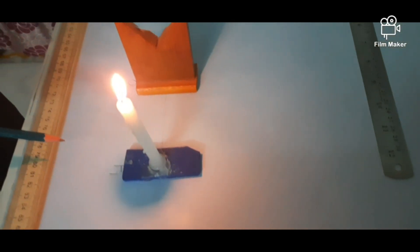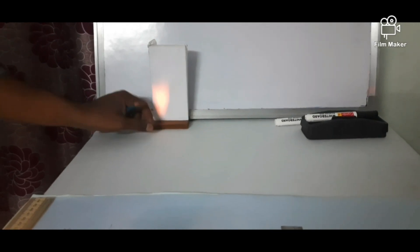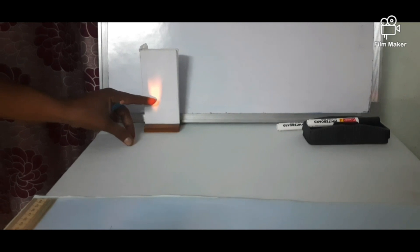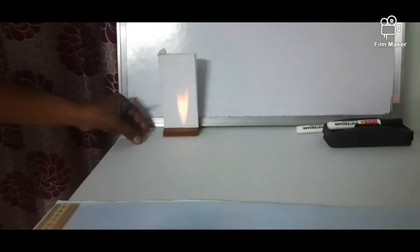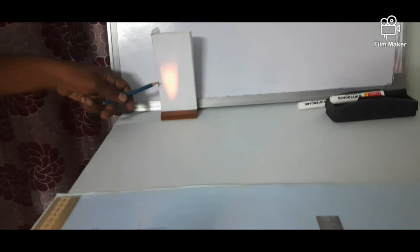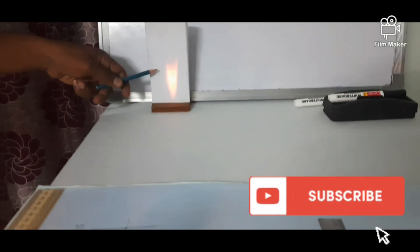Now let us see Case 5: when the object is placed on the focus. When the object is at the focus, you observe a highly magnified image that is real and inverted. The image forms at infinite distance — very far away, which we treat as infinite. The nature of the image is real, inverted, and highly magnified. Compared to the size of the object, the image size is very, very large.